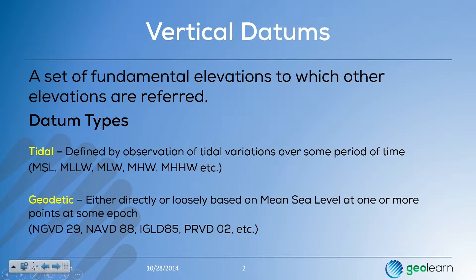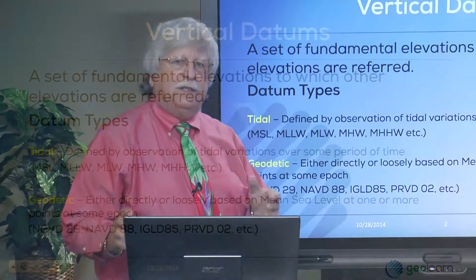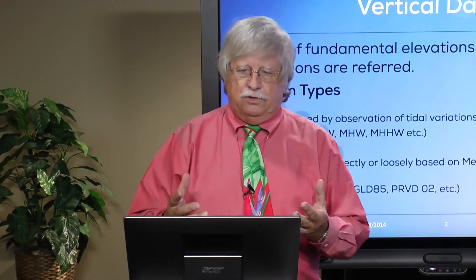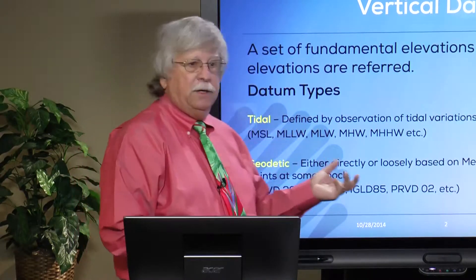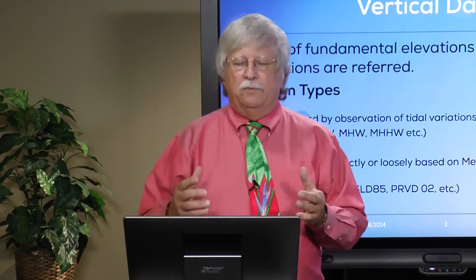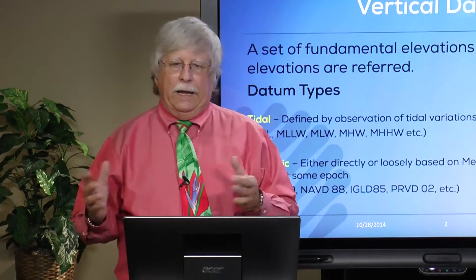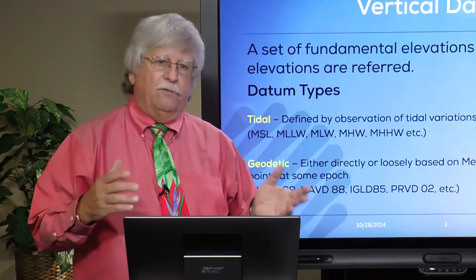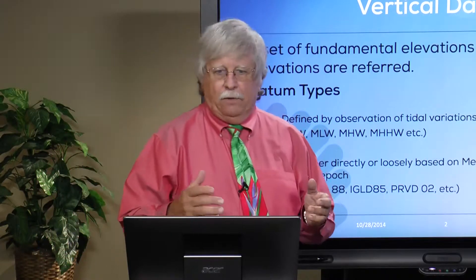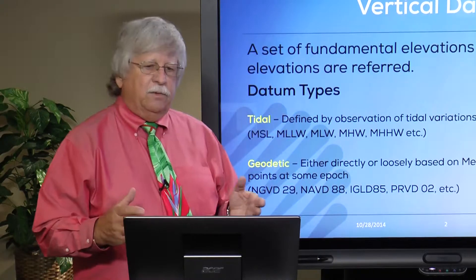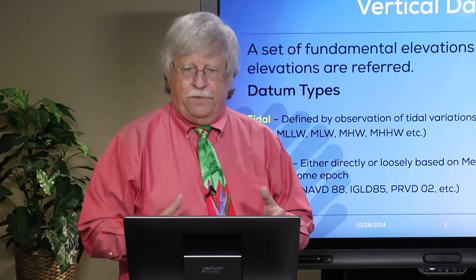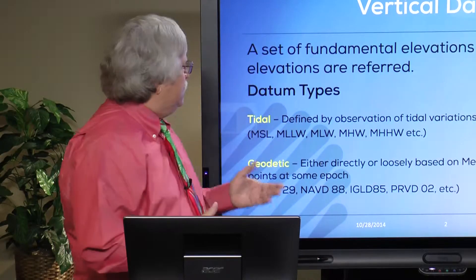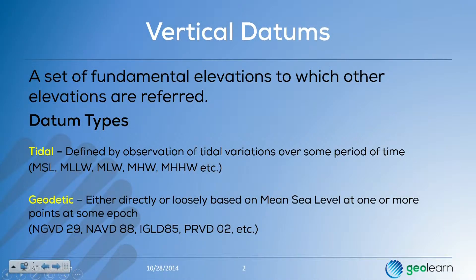In talking about vertical datums, you really have to break them down into two different realizations. One is a tidal datum — that is, a datum that reflects the interface between the water and land boundary along the seashore, gulf, or in the Great Lakes. The other is a geodetic datum. A tidal datum is defined by the tidal variations at a specific location.